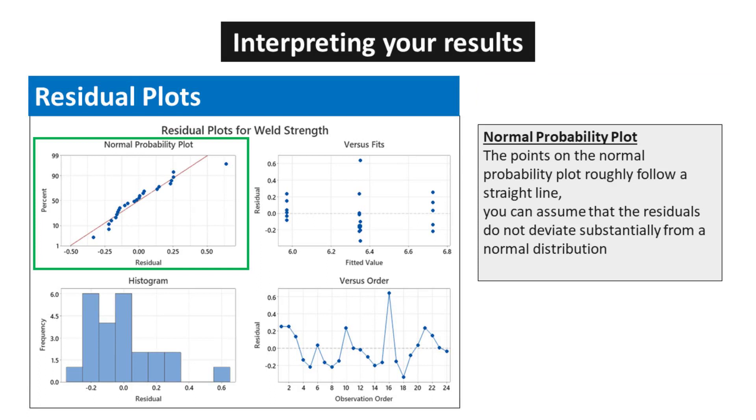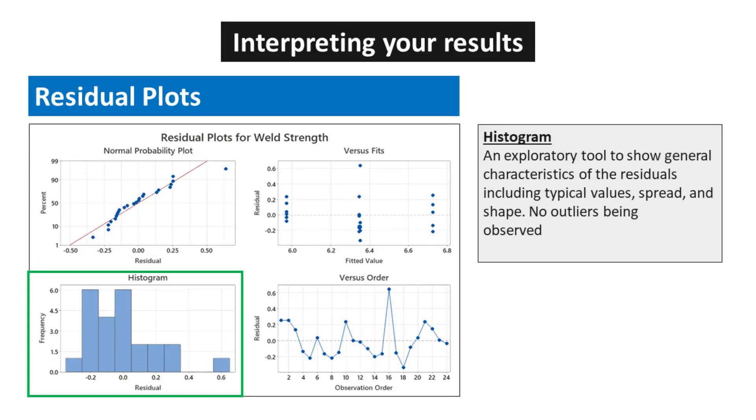For Normal Probability Plot, the points on the Normal Probability Plot roughly follow a straight line. You can assume that the residuals do not deviate substantially from a normal distribution. For Histogram, an exploratory tool to show general characteristics of the residuals including typical values, spread, and shape. No outliers being observed.